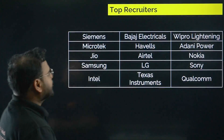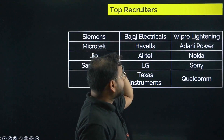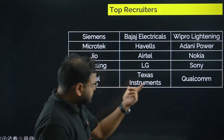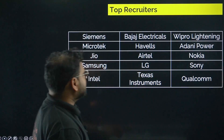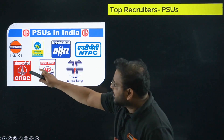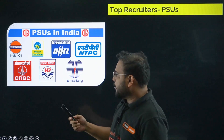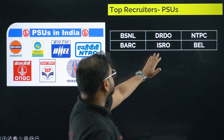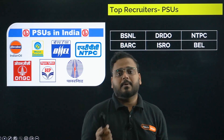The top private recruiters for ECE include Siemens, Bella Electricals, Wipro, Lightning, Microtech, Hybels, Adani Power, Jio, Airtel, Nokia, Samsung, LG, Sony, Intel, Texas Instruments, and Qualcomm. In the PSU sector, top recruiters include Indian Oil, Bharat Petroleum, BHEL, NTPC, Power Grid, ONGC, HP, DRDO, ISRO, and BEL — all top public sector undertakings that recruit from ECE.